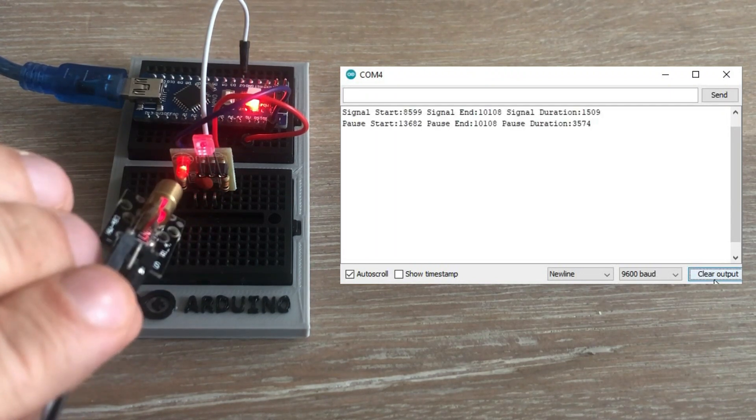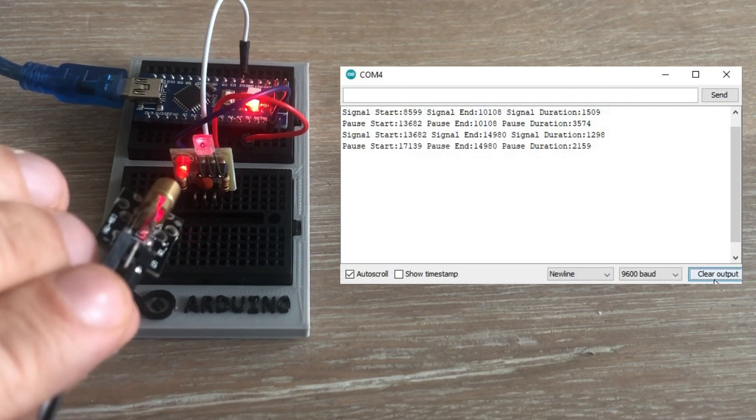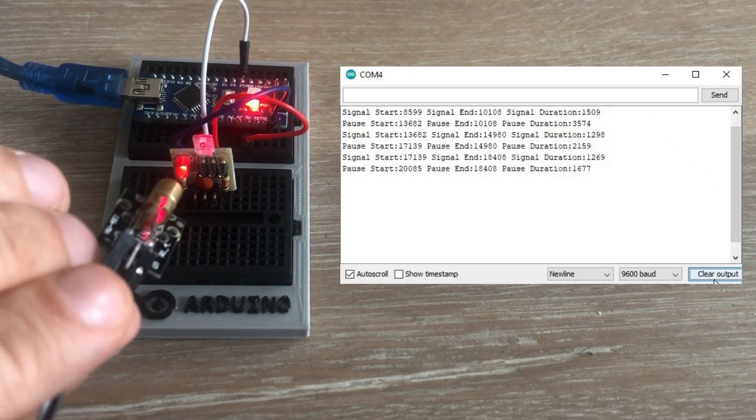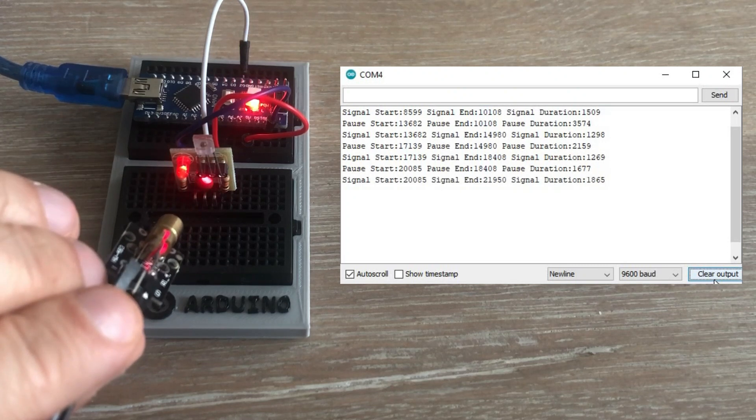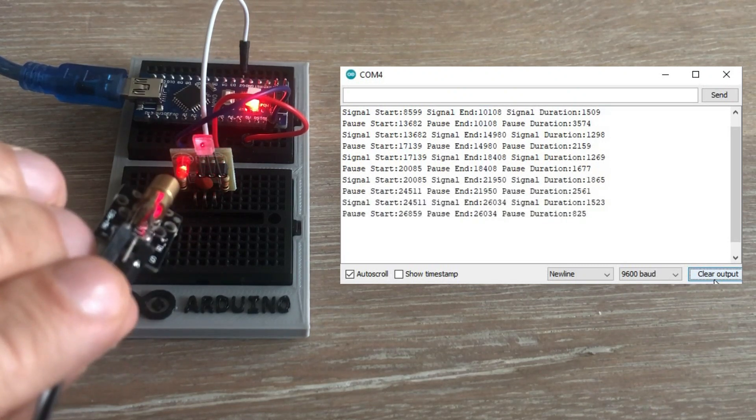The code also reports the laser signal length, but also provides information about start, end and duration of each pause in between signals. Which is great.